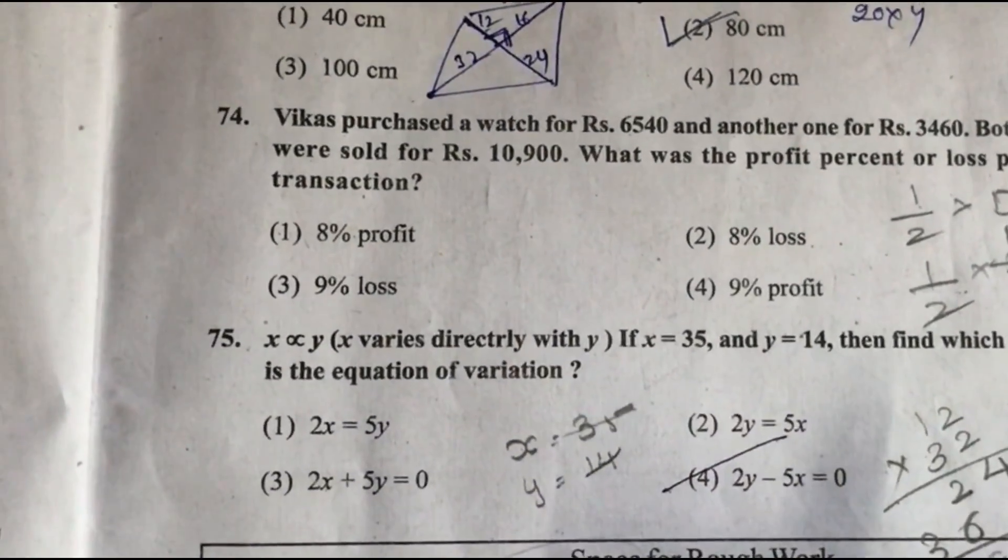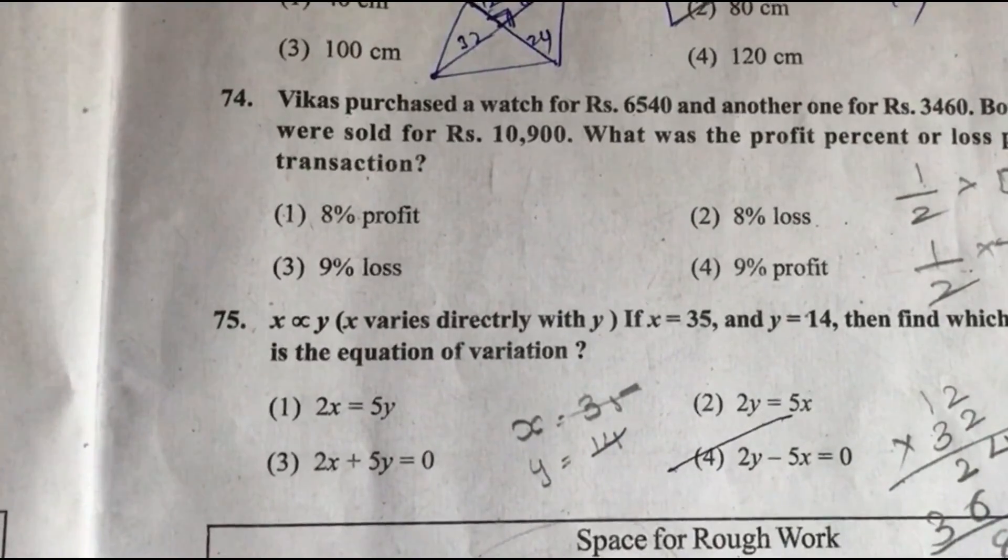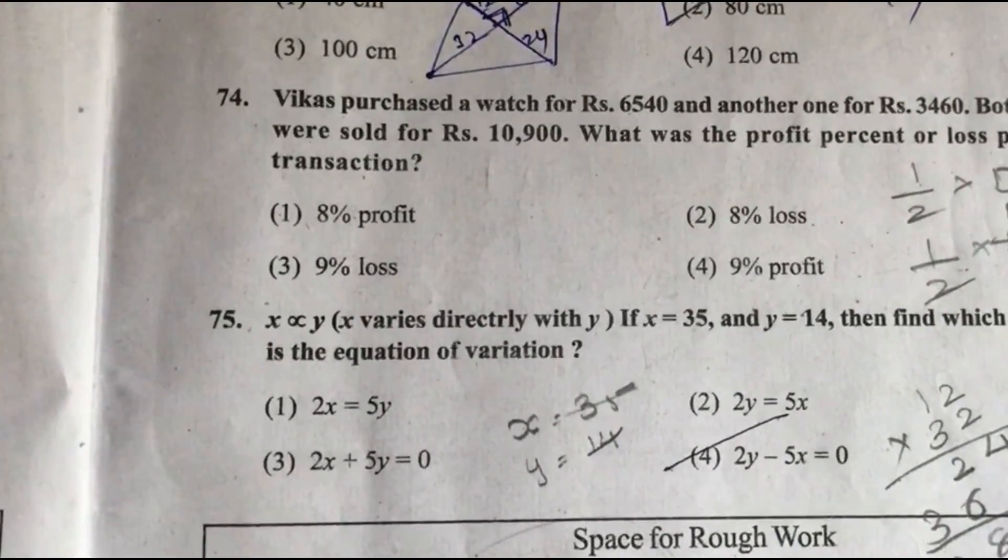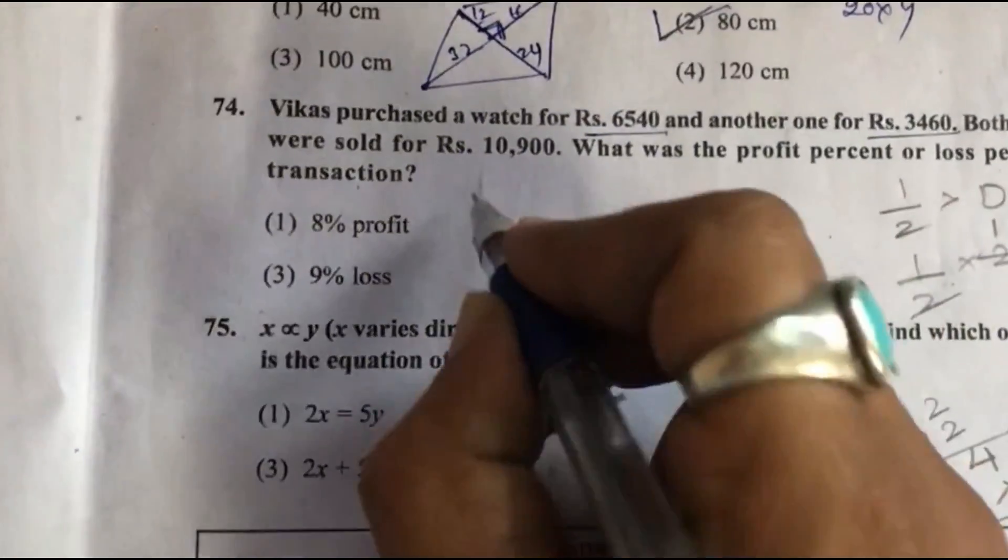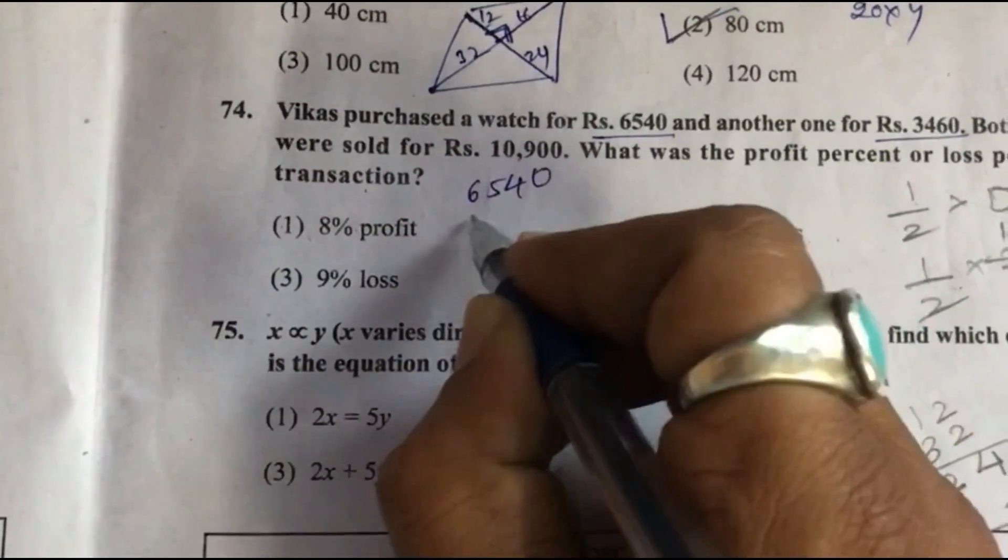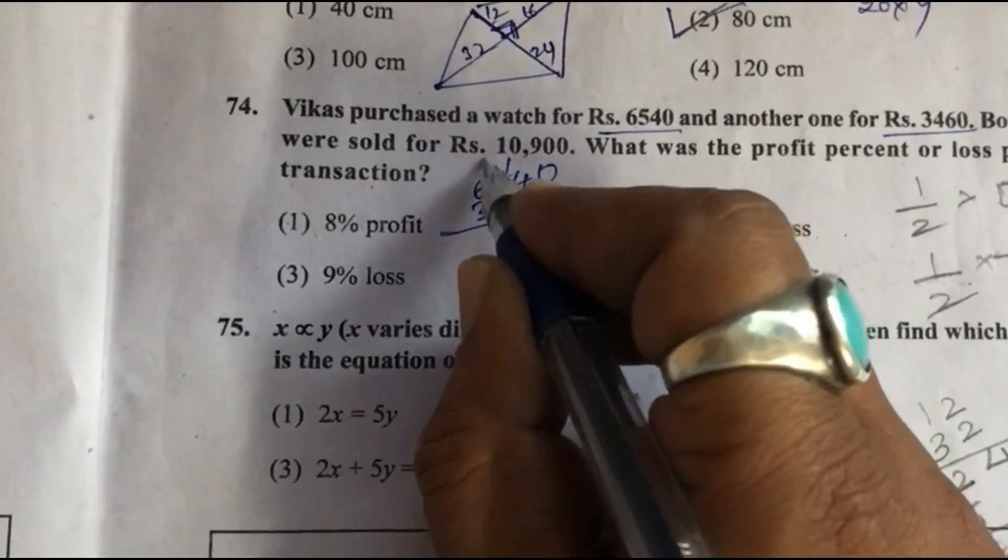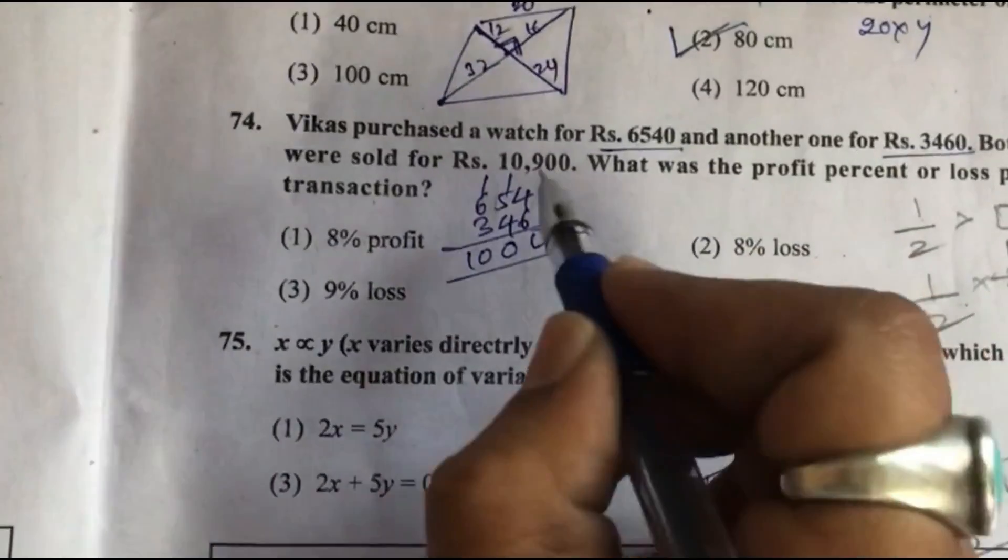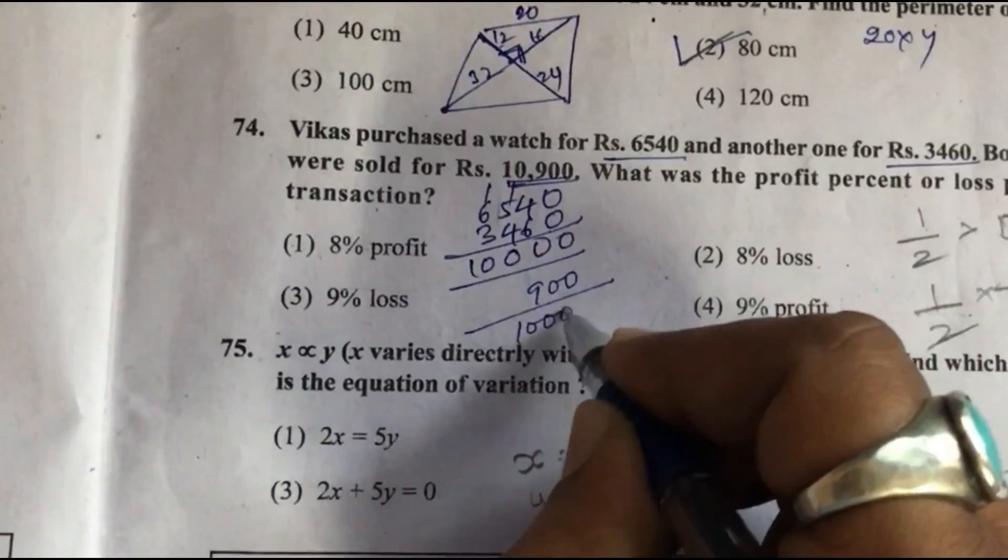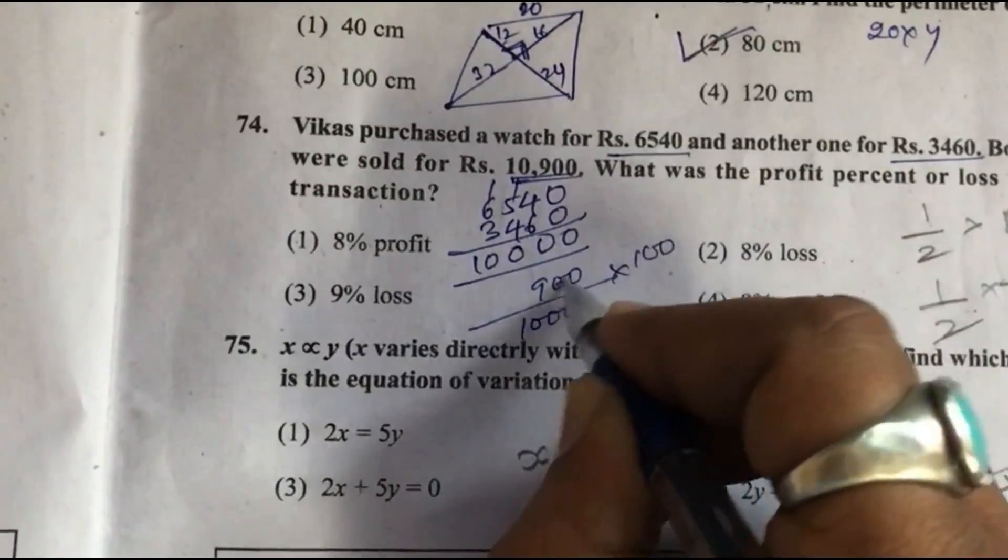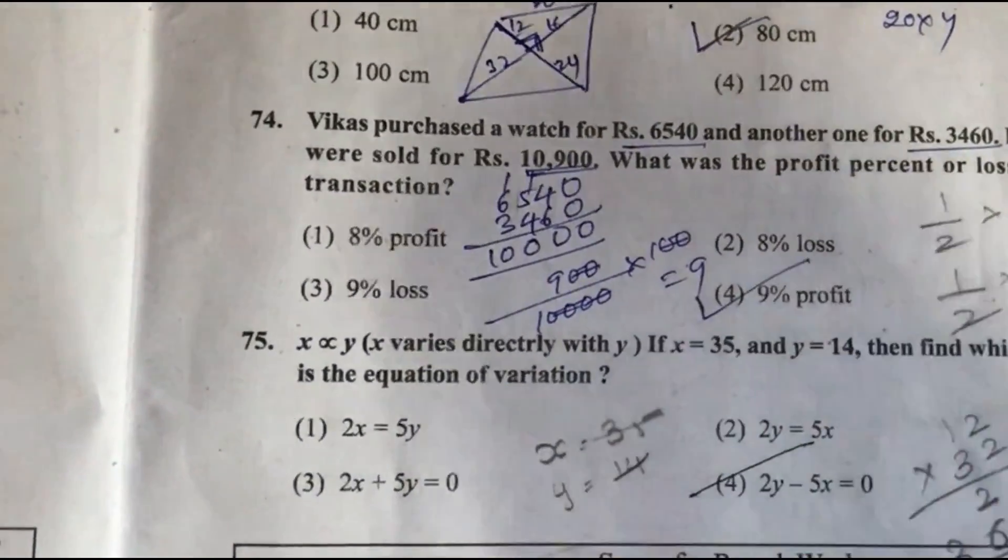Question 74: Vikas purchased a watch for rupees 6540 and another one for rupees 3460. Total of these two is 10,000 and sold for 10,900. So 900 is profit. Profit percentage is 9% profit, option 4.